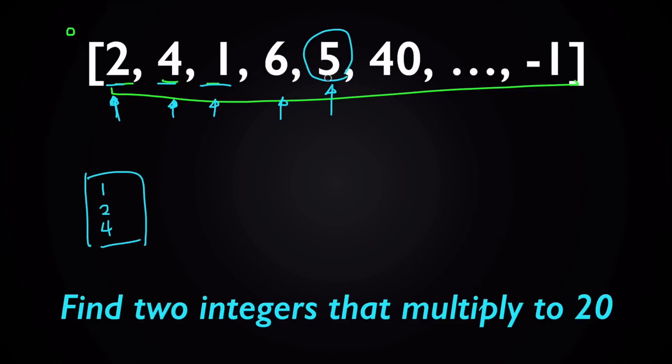So instead of going through this whole array, we can just check this separate piece of paper and ask myself, is there four already, or have we already seen the number four? The answer is yes, so we can just return four and five from this function and we're done. This way, with this solution, we don't have to check every single potential pair in this array to see if they multiply to 20.